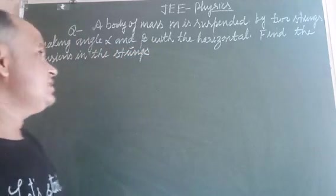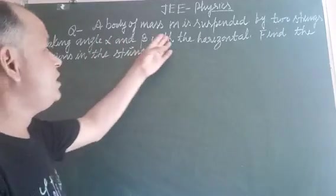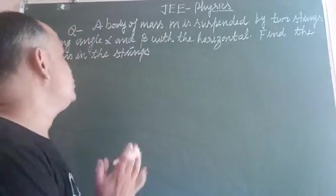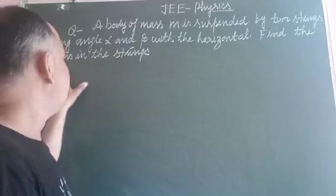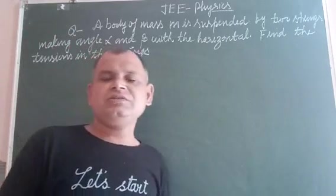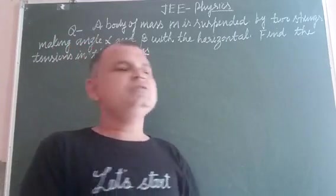The question is saying that a body of mass M is suspended by two strings making angle alpha and beta with the horizontal. This question is mainly based on Newton's second law of motion.